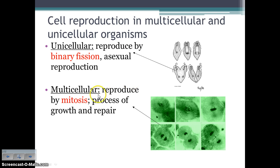Multicellular organisms, on the other hand, reproduce through a process called mitosis. It's much more complicated. It's a process of growth and repair — how we make more cells so that the organism can grow larger and also how we make more cells to repair injuries.